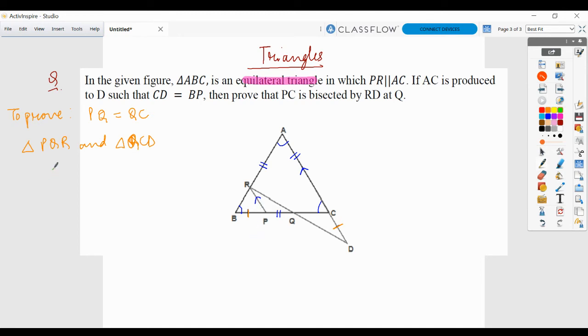To prove congruence, we need to prove three elements which are respectively equal to each other. So the very first element that is evident is the vertically opposite angles. So we can say angle RQP is equals to angle CQD by vertically opposite angles.